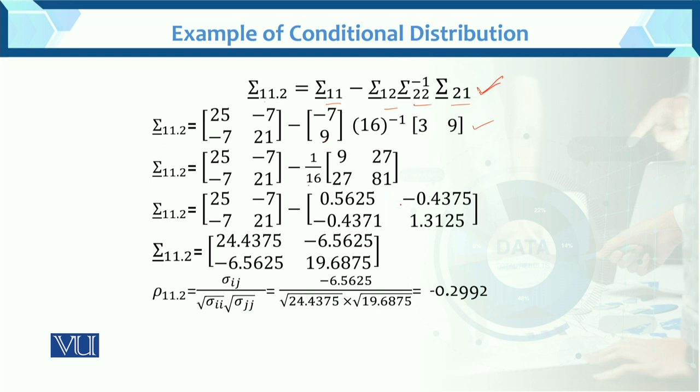After simplification, we will get the result of sigma 11.2. This is the variance covariance matrix of sigma 11.2. This is the conditional.